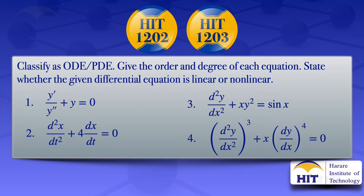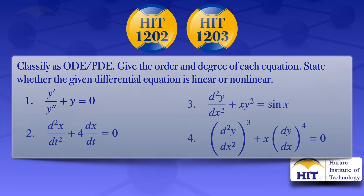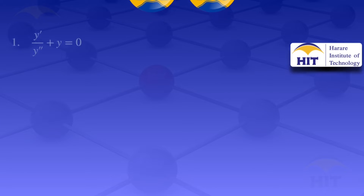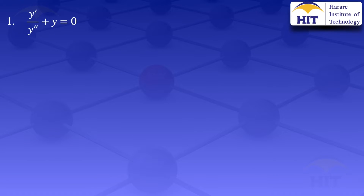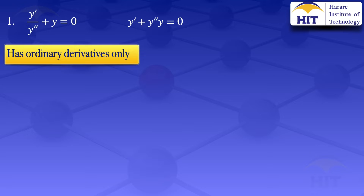Starting with the first equation, y prime divided by y prime prime plus y equals zero, I will multiply throughout by y prime prime so that I rewrite that equation as y prime plus y prime prime multiplied by y equals zero. What we see is the equation only has ordinary derivatives, and therefore it is an ordinary differential equation, which we write in short as ODE.